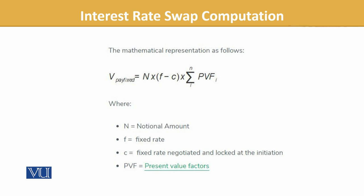F stands for the fixed rate, and C is the fixed rate negotiated and locked in at initiation. One value will be the revised equilibrium rate and one will be the original rate, along with the present value factor. This gives us the value of the swap at any point in time.